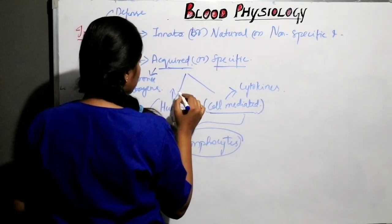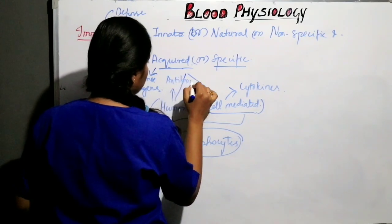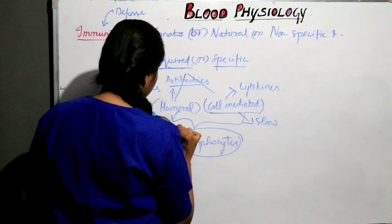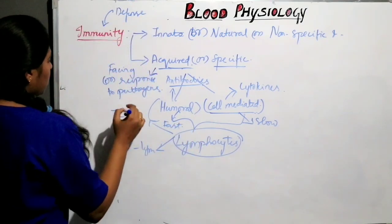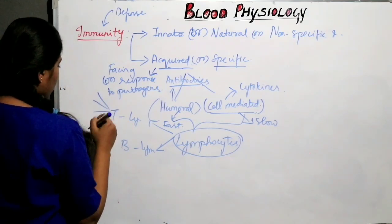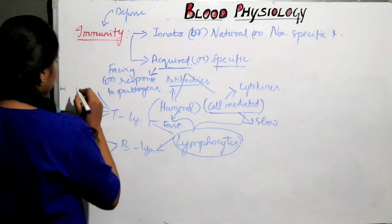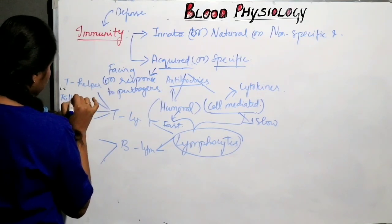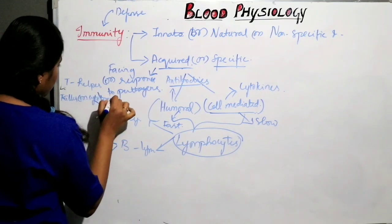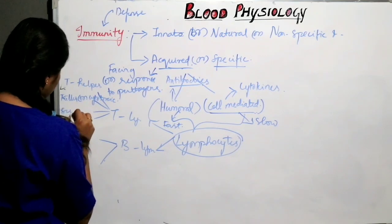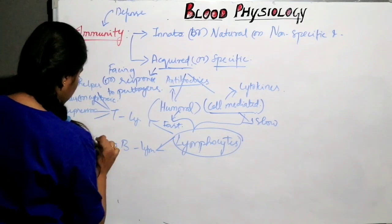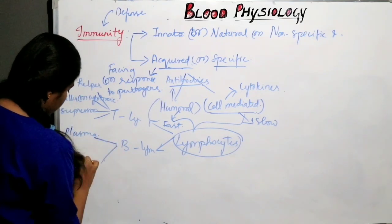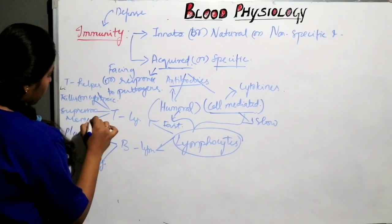T lymphocytes are divided into four types: T helper, killer or cytotoxic T cells, T suppressor, and memory T cells. B lymphocytes are divided into two types: plasma cells and memory cells. Immunoglobulins are of five types remembered as GAMD: IgG, IgA, IgM, IgE, and IgD. IgE is released in case of allergic reactions. IgA is released by external secretions like tears and breast milk. IgD is used to identify B lymphocytes. IgG and IgM help in complement function.